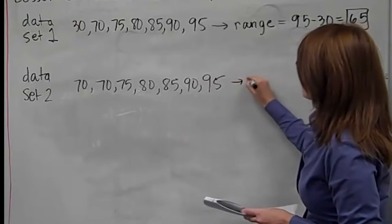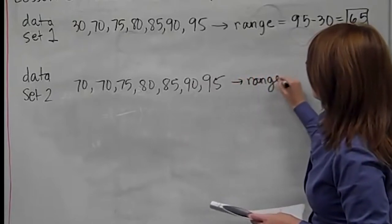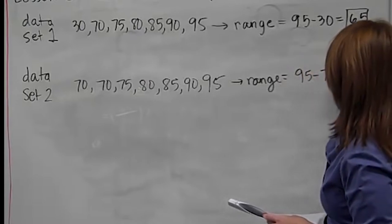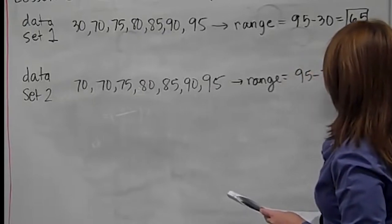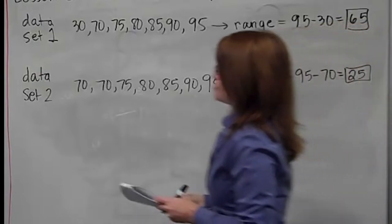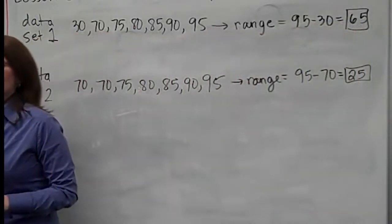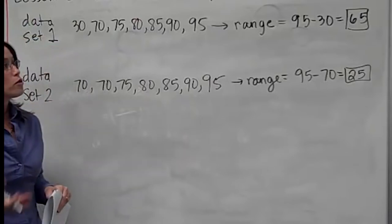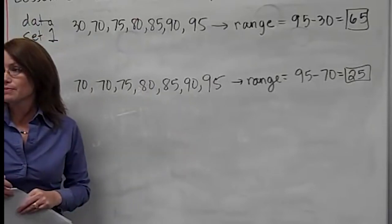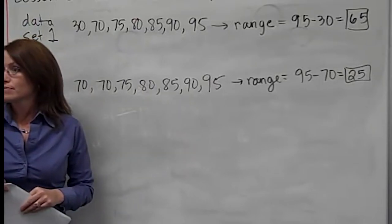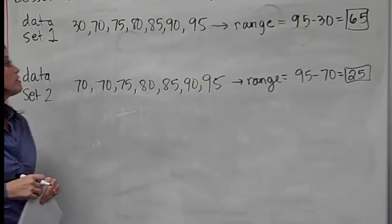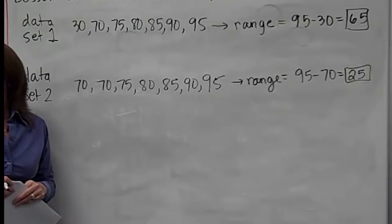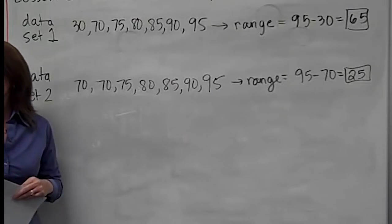The range for the second data set is the same calculation — highest minus lowest — and the range would be 25. If these were test grades and you were the teacher, which data set would you prefer: data set one or data set two?